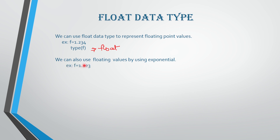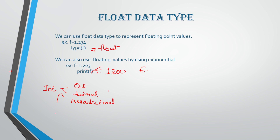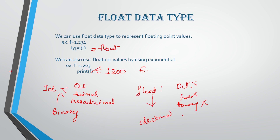For example, you can write f equals to 1.2e3, where e here represents the exponential value. If you give print(f), it is going to print you the value that is 1200. Instead of this small e, you can also use a capital E for exponential values. The main advantage of the exponential form is we can represent any big values in less memory. We can represent integer values in all forms — octal, decimal, hexadecimal, and binary. But when it comes to floating values, you cannot give them in octal, hexadecimal, or binary. The only way you can represent your floating point is in decimal form. Please keep this in mind.